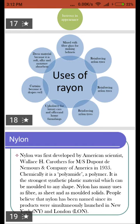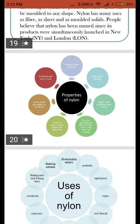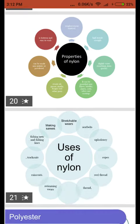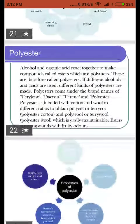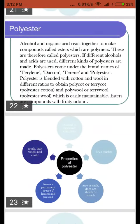The second fiber is nylon, which is also a polymer. It is a very strong polymer and is used in making ropes and mixing with other materials due to its high tensile strength.